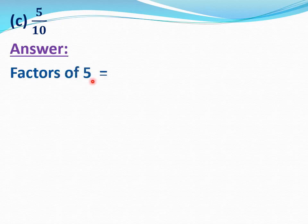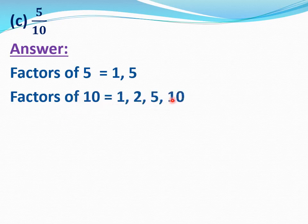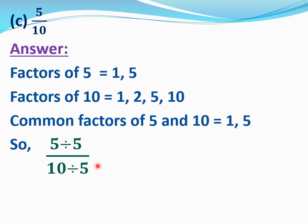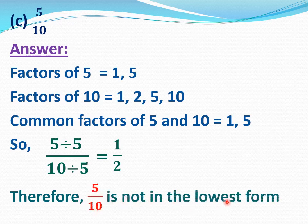Now C part, 5 by 10. We have to check whether 5 by 10 is in the lowest form or not. First we will calculate factors of 5 and 10. Factors of 5 equal 1 and 5. Factors of 10 equal 1, 2, 5, and 10. Common factors of 5 and 10 equal 1 and 5. 5 is the highest common factor, so we will divide 5 by 10 by 5. 5 divide 5 and 10 divide 5 equal 1 by 2. Therefore 5 by 10 is not in the lowest form; 5 by 10 equal 1 by 2.